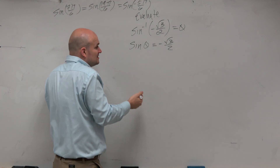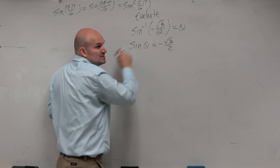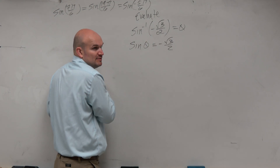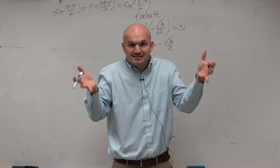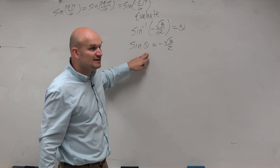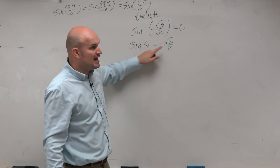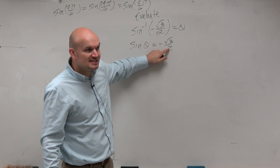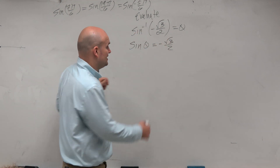If you can understand that, you say: sine of what equals negative square root of 3 over 2? That's why we did that long process at the beginning — I just need to find the angle that satisfies that. That's basically what we're looking at.